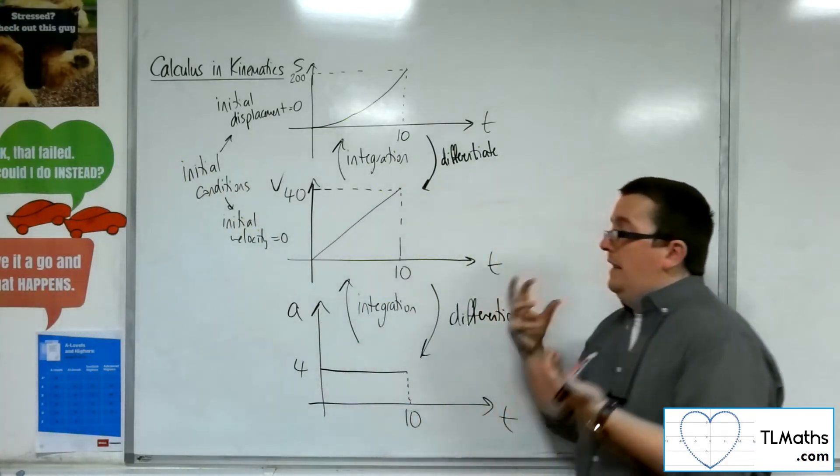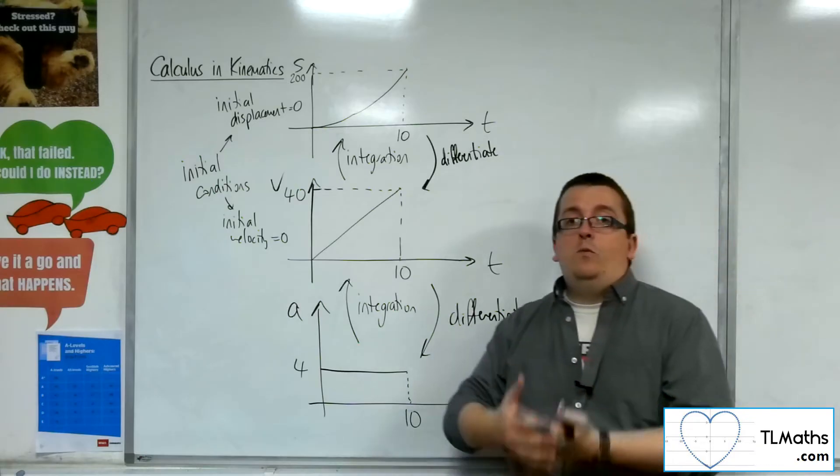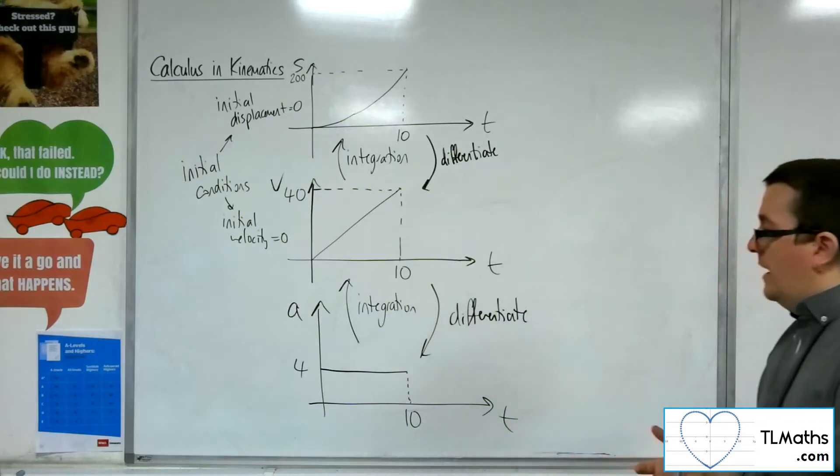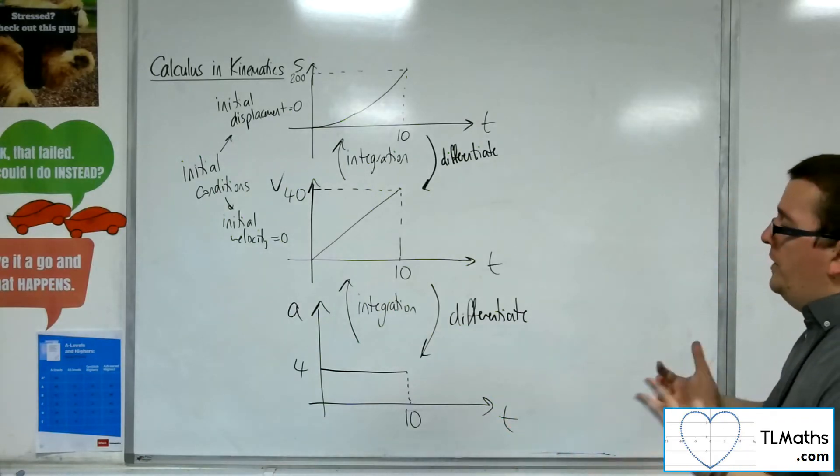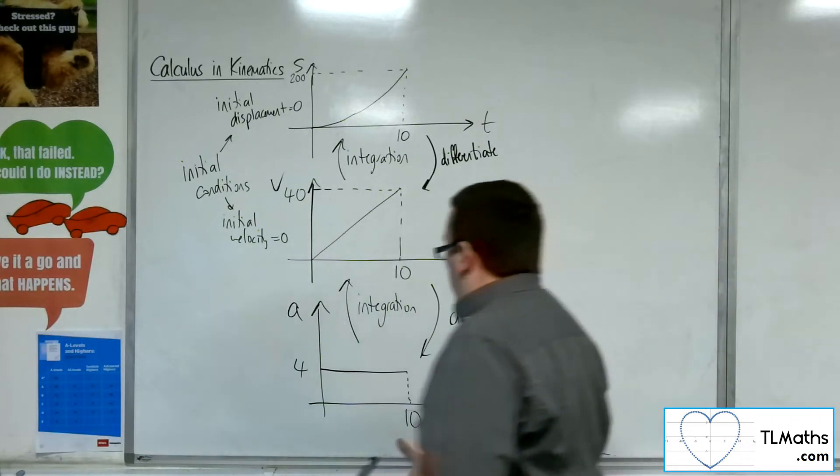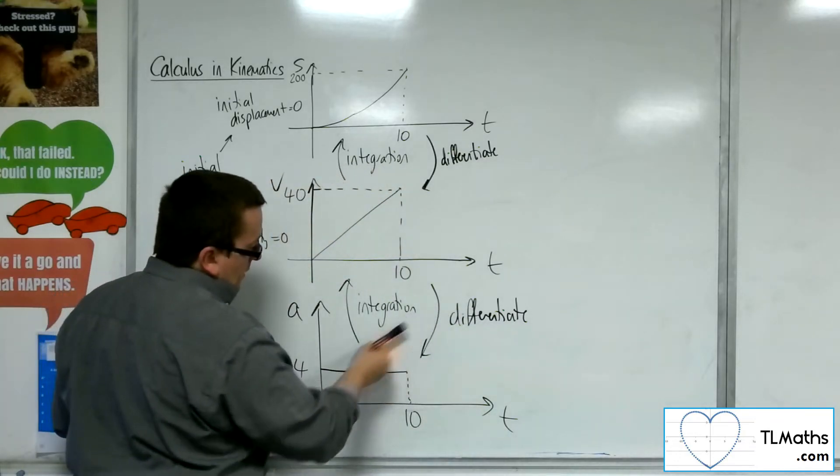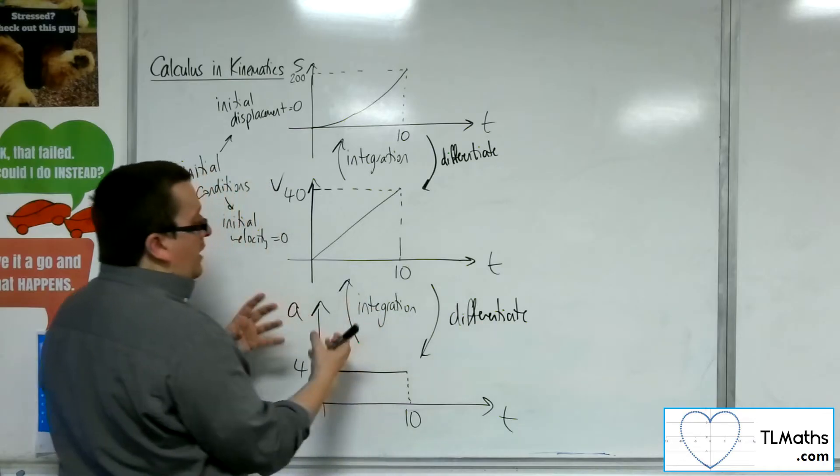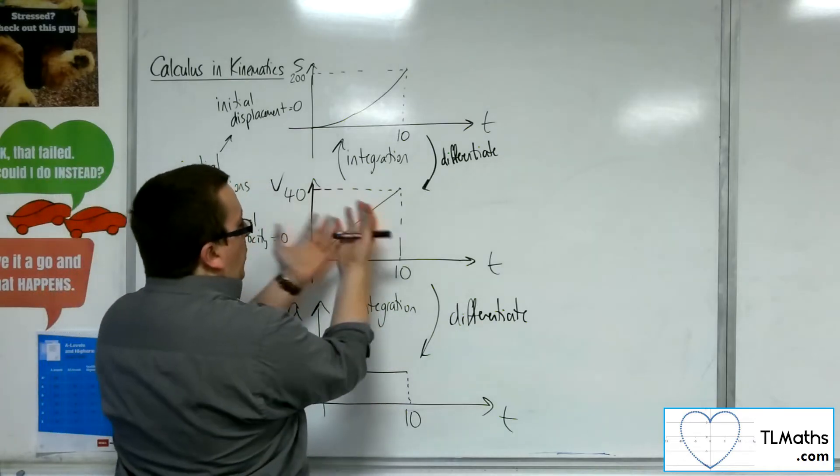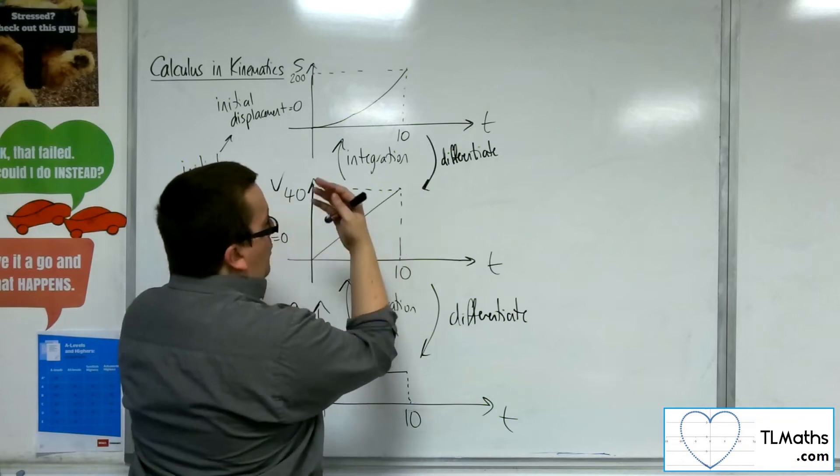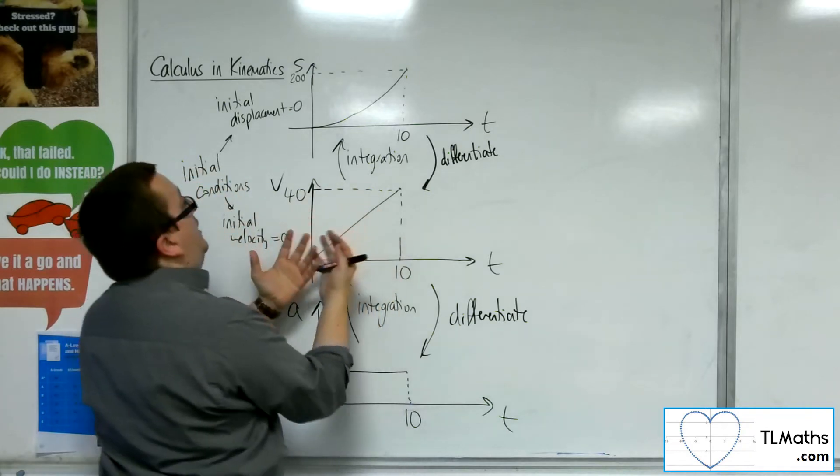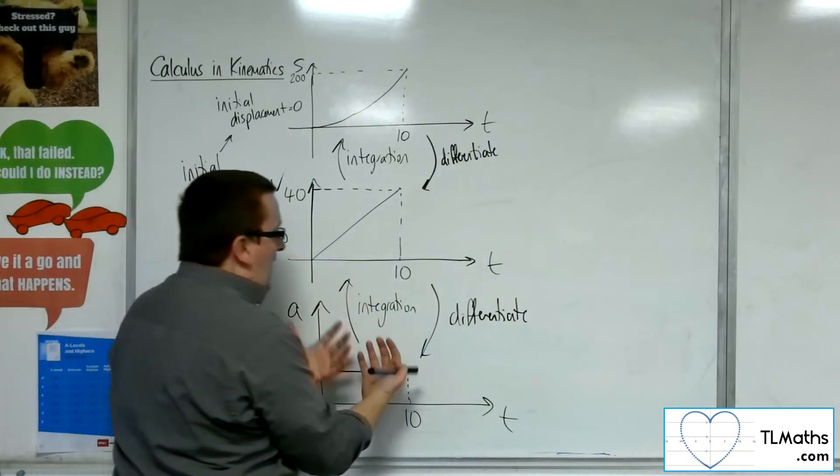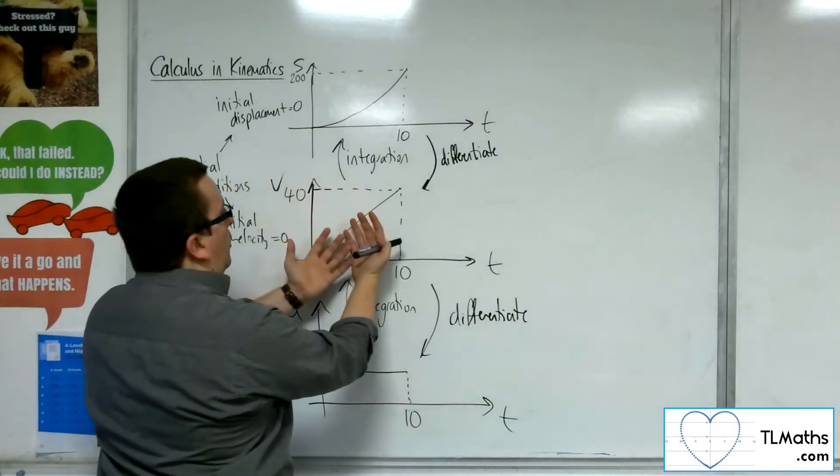Now, this then leads into the idea of what if the acceleration wasn't constant. What would happen then? Well, the acceleration could be a straight line going diagonal. Then if I integrate that, I'm going to go from a linear equation to a quadratic one. And then when I integrate that to get to the displacement, I'm going to get a cubic result. So you can see how we can go from linear to quadratic to cubic.